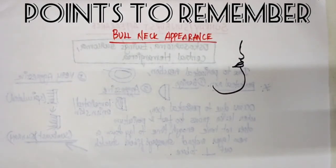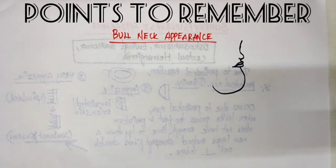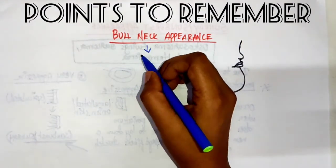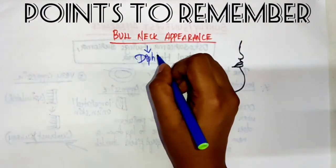Hello everyone, today we are going to see about the bull neck appearance. This is very important for your oral pathology as well as oral medicine exams. It is a very simple term — you just have to know what it is and where it is found. The bull neck appearance is usually seen in diphtheria.